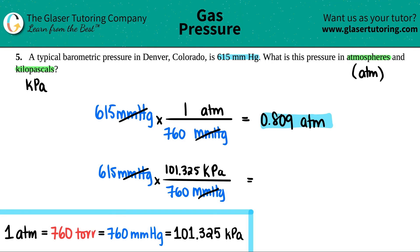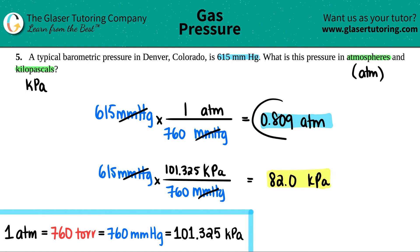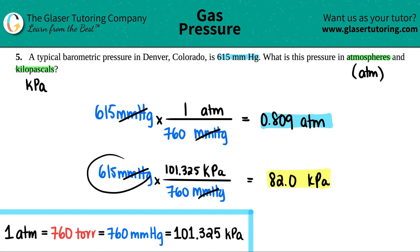Get rid of the millimeters of mercury and do the math: 615 times 101.325 divided by 760. With three sig figs, this comes out to 82.0 kPa. All three are equivalent to each other: 0.809 atm equals 82.0 kPa equals 615 millimeters of mercury.